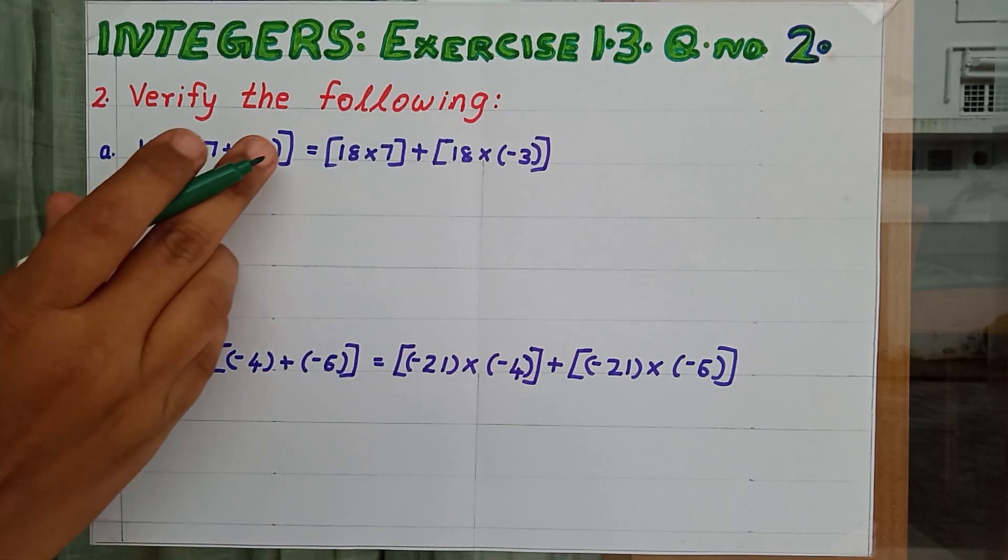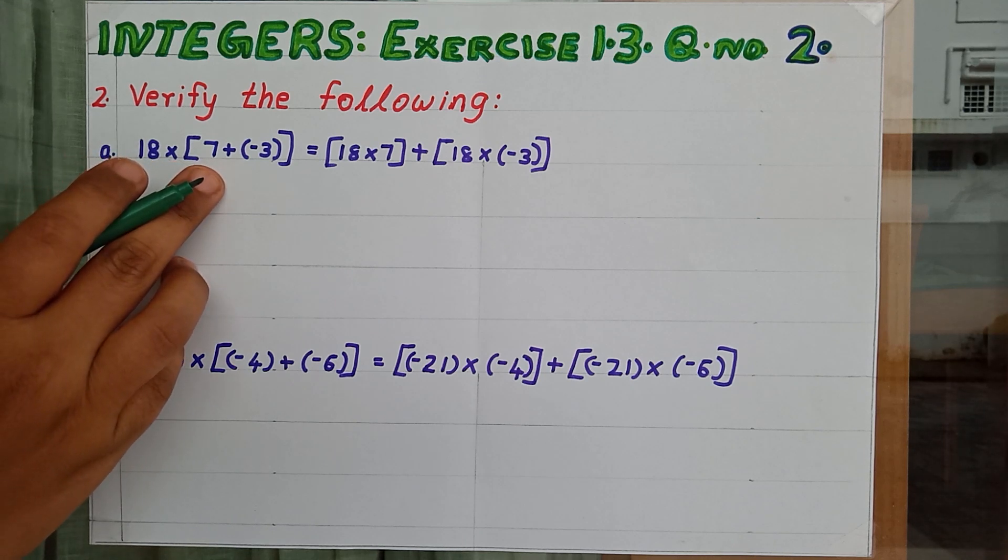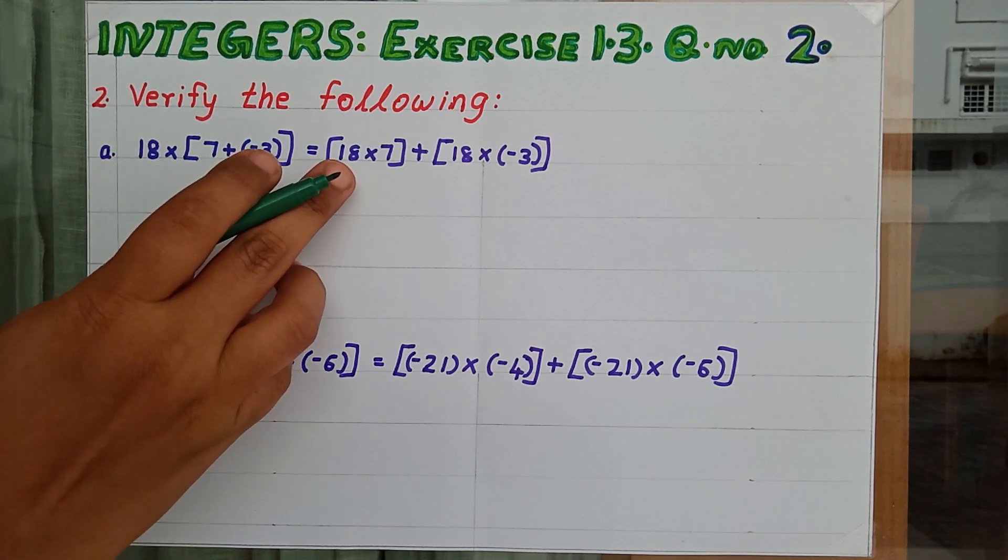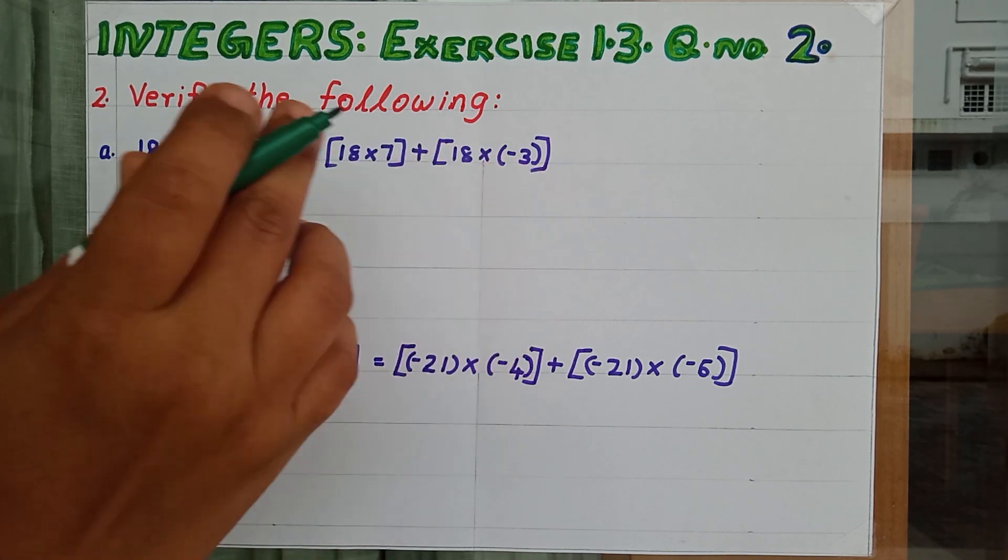Verify the following. First one is 18 into 7 plus minus 3 equal to 18 into 7 plus 18 into minus 3.